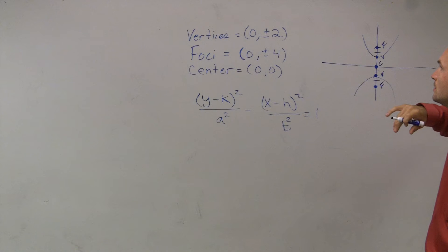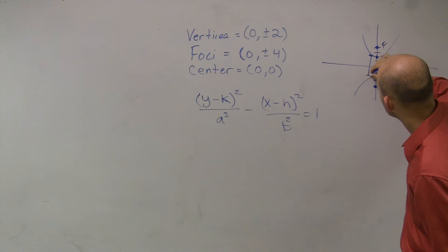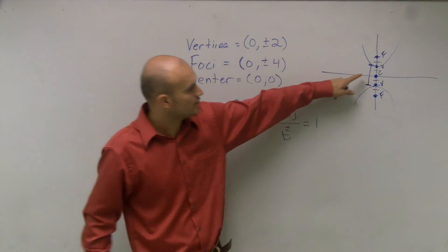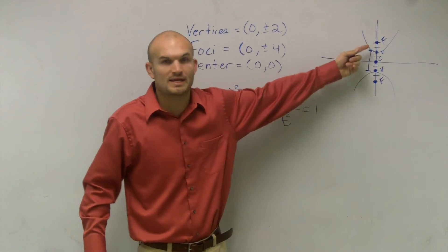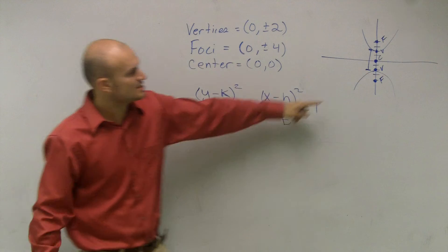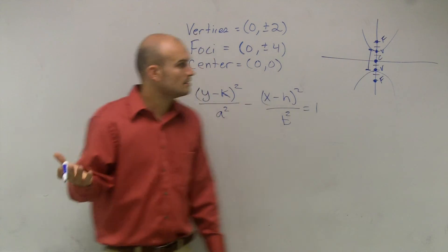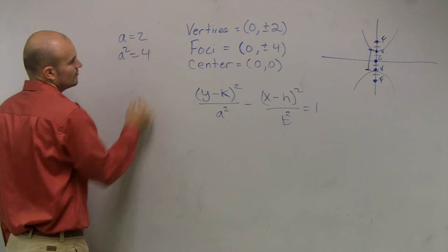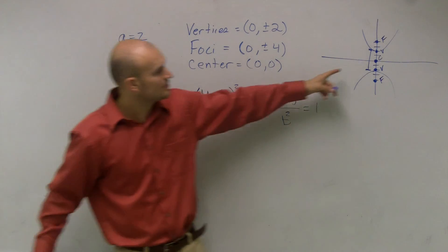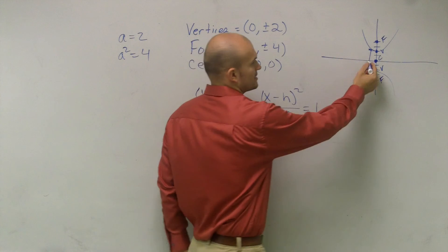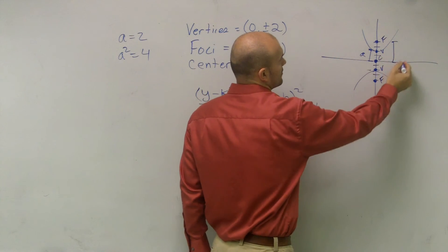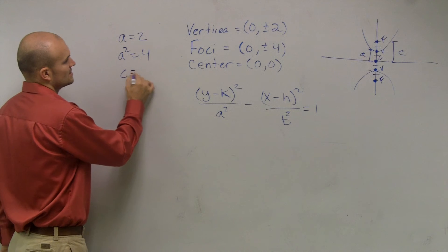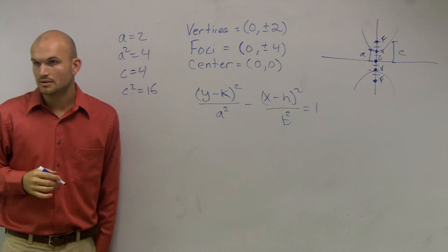The distance from your center to your vertice is going to be a. So the distance from center to one vertice is 2. So I can say that a = 2, so therefore a² = 4. Then the distance from the center to your foci is c. So we look at our distance, which is 4, so I can say c = 4, so c² = 16.